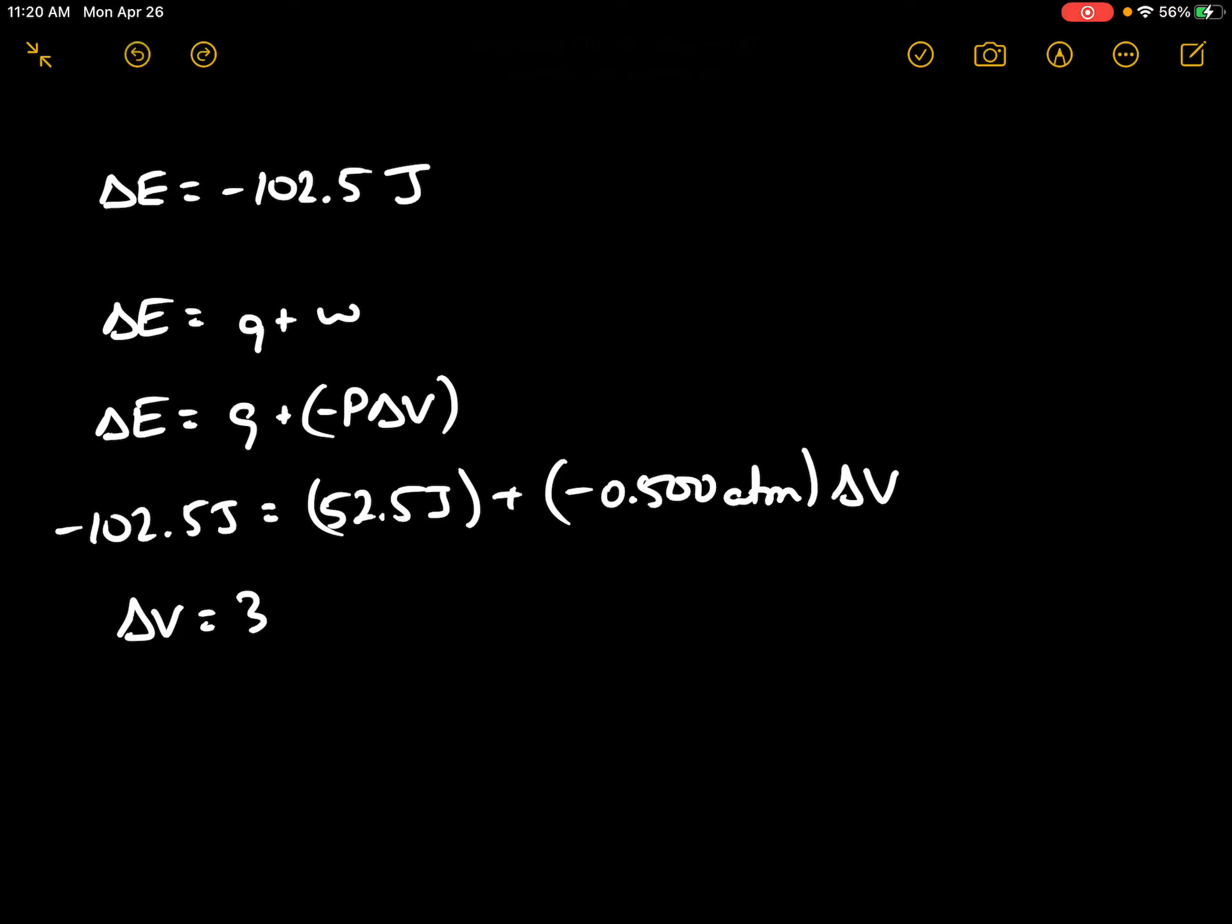We'll convert this to liters, so liter atmosphere over 101.3 joules, and this works out to 3.06 liters. There's our delta V.